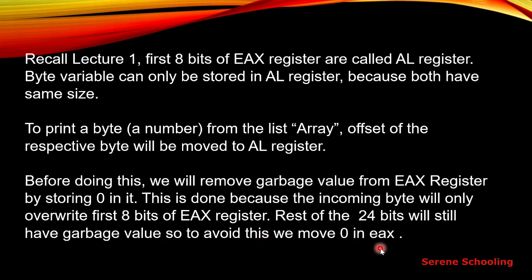To avoid garbage, we move zero into EAX first, then use the AL register for our byte array data. If we are using the DWORD data type, it uses 32 bits and EAX is also a 32-bit register, so both are compatible and we don't need to move zero into EAX. But when using byte data type with EAX, since they are not the same size, we must move zero into EAX first.